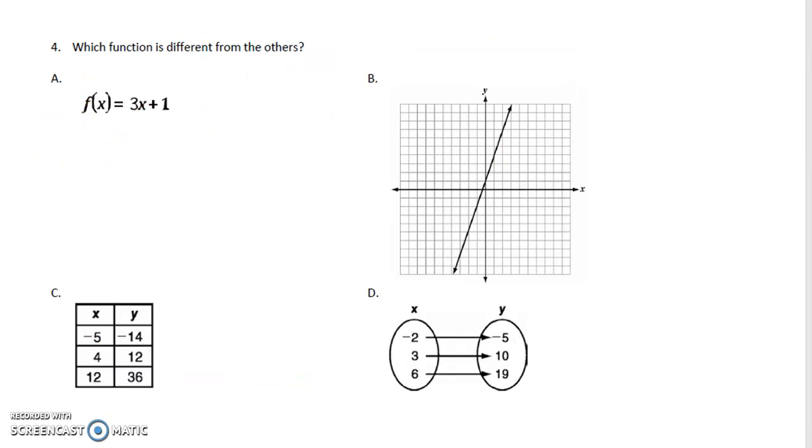Last one we're going to look at: which function is different than the others? If you chose C, that is correct. So this graph, 1, 2, 3 over 1, this is actually the graph for y equals 3x plus 1. So A and B are the same.